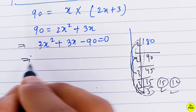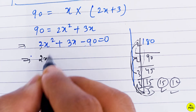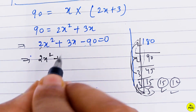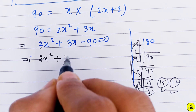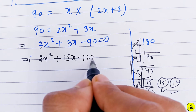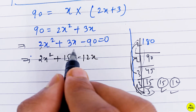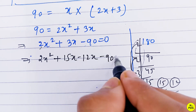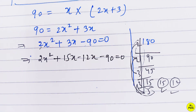We split the middle term: 2x² + 15x - 12x - 90 = 0.